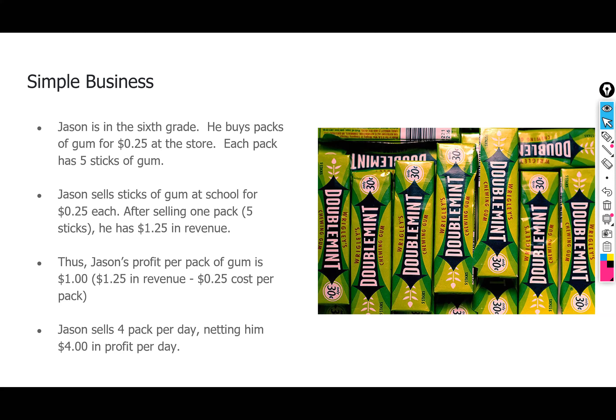This is one of the great examples to teach valuation to someone coming in new and fresh. We're going to try to value Jason's business — a sixth grader. Jason buys those 25-cent packs of gum that have five sticks in them, and he sells those sticks at school for 25 cents each. So he buys a pack for 25 cents, sells it for $1.25. That's $1.25 in revenue per pack and a dollar in profit per pack.